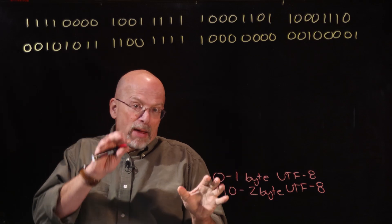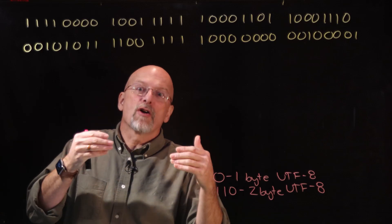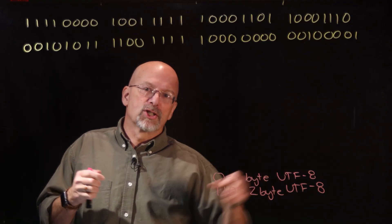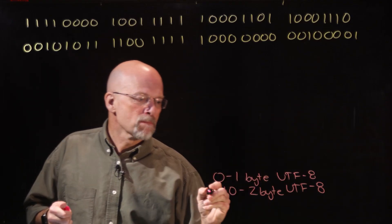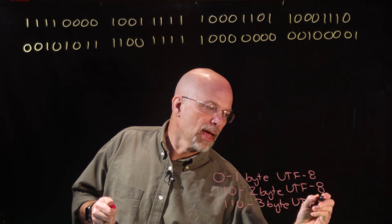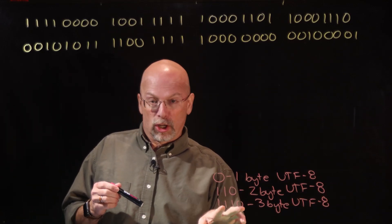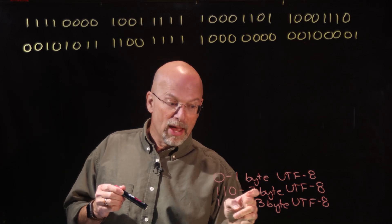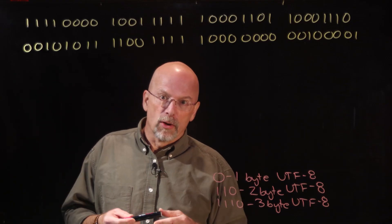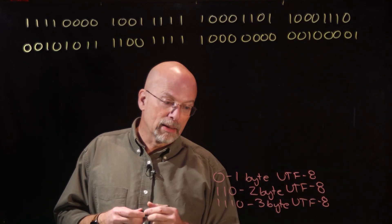For two-byte UTF-8, the one-one-zero pattern takes up three bits of the first byte, leaving five bits for the first five bits of our Unicode code point. The remaining bits are found in the next byte. If it starts with one-one-one-zero, that's a three-byte UTF-8. Four bits are taken up by the pattern, the next four bits give the first four bits of the Unicode code point, and the remaining bits are in the two bytes that follow.